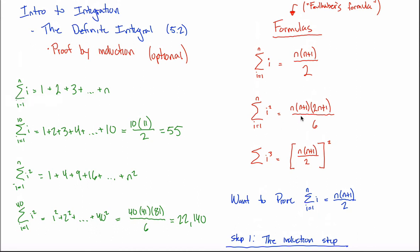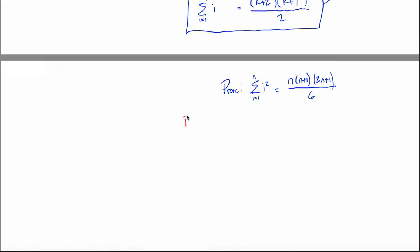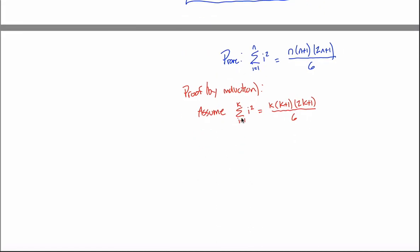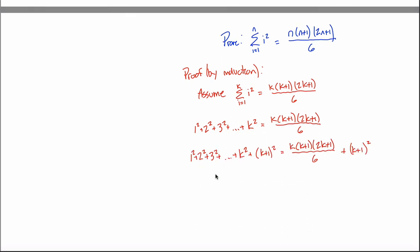I now know that this formula must be true for any value of n using this really clever method called induction. You can use induction to prove the rest of these formulas as well. Here's my statement for the next one. When proving something by induction, you typically tell the reader you're doing so. You start with your assumption: assume that the sum from i equals one to k of i squared equals k times k plus one times two k plus one over six. Assume the formula holds true for some value k — I don't know that it does, but just assume it. Then I would add k plus one squared to both sides of the equation.